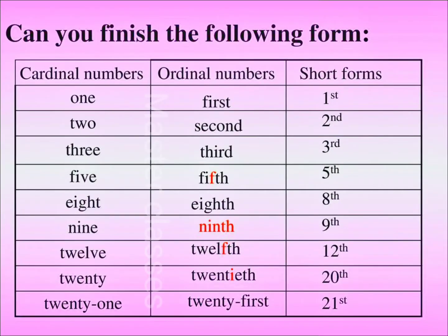Hello friends, welcome to master classes. Today we will learn about four different cardinal numbers and ordinal numbers. One is first, two is second, three is third, five is fifth, eight is eighth, nine is ninth.